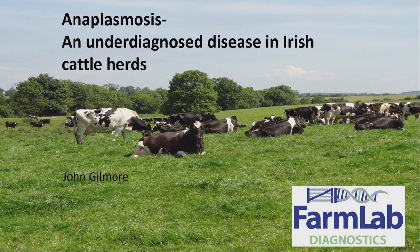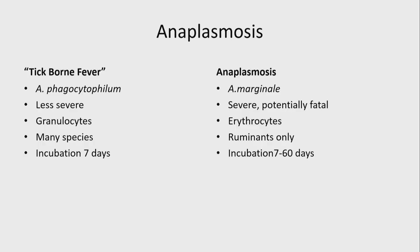It's a disease that we've only started looking for over the last 12 months or so. Anaplasmosis is a disease which is broken down into two different categories in cattle. Traditionally, tick-borne fever was described as being caused by Anaplasma phagocytophilum and anaplasmosis being caused by Anaplasma marginale. Tick-borne fever is generally described as being a less severe disease, whereas anaplasmosis caused by A. marginale can be a very significant and potentially fatal disease.